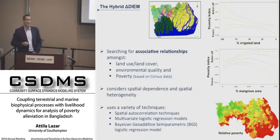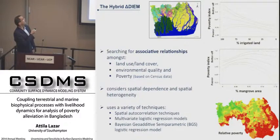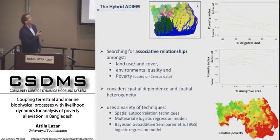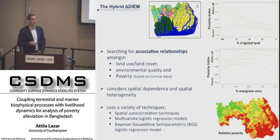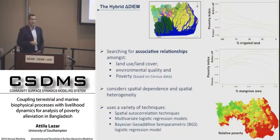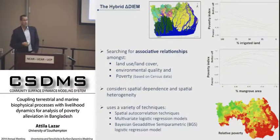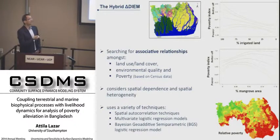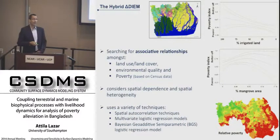The hybrid model is using a statistical associative relationship. This statistical model is trained based on land use and land cover information, environmental quality information like soil salinization, and poverty information coming from census data available for three years over the last 30 years. This map is created based on census data — red means high poverty, green means relatively better off. Our colleagues in Southampton are applying a number of statistical techniques to create relationships between those variables, including infrastructure and road networks.